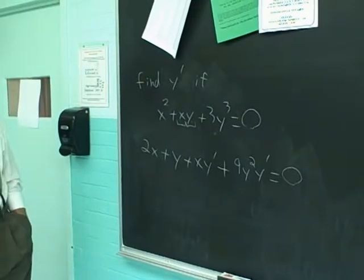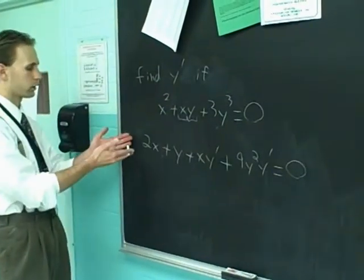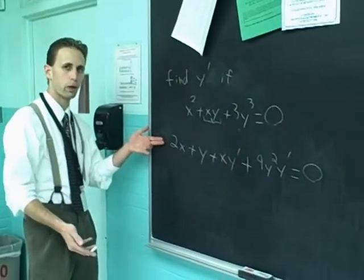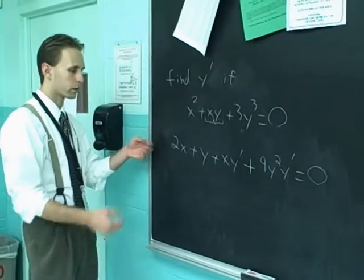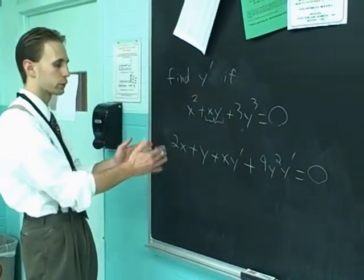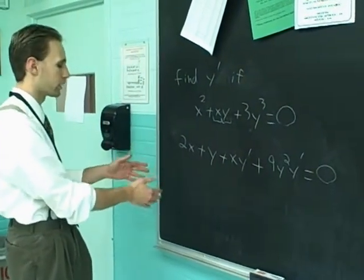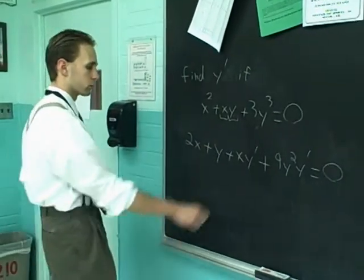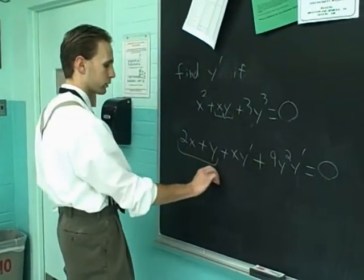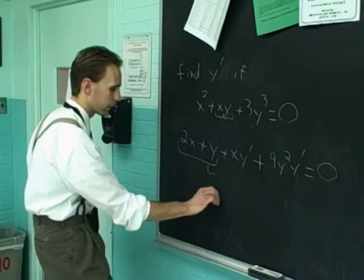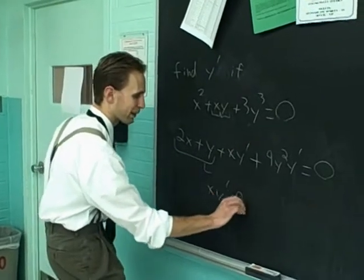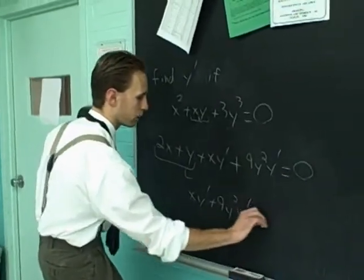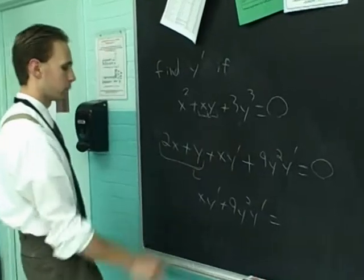Once you do that, you'll have a string of terms, some of which will have a y prime in them, some of which will not. Group all the y primes on one side of the equal sign and take everything else over. So we'll take these to the other side and we'll leave these two. So we'll have x y prime plus 9y squared y prime equals minus 2x plus y.